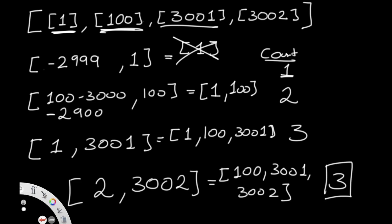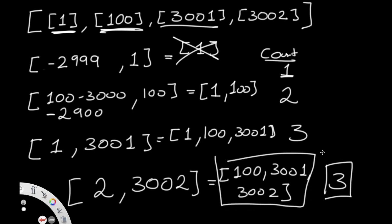Once you understand the question, solving it is actually not too hard. All we're going to do is implement a queue to solve this question. At the very end, we just return the length of our queue. In the last example, we had three valid requests, so the queue length was three — and that's what we output.